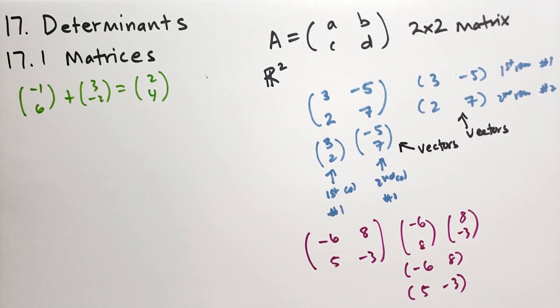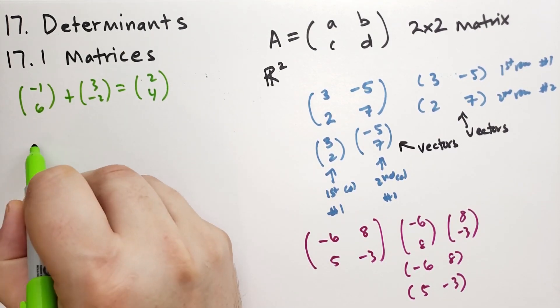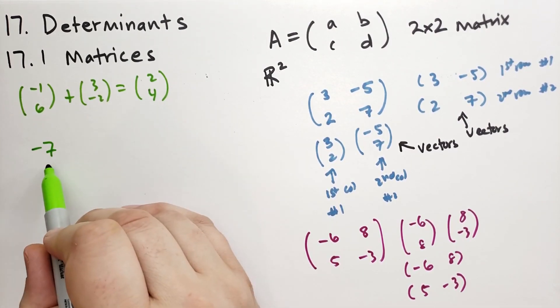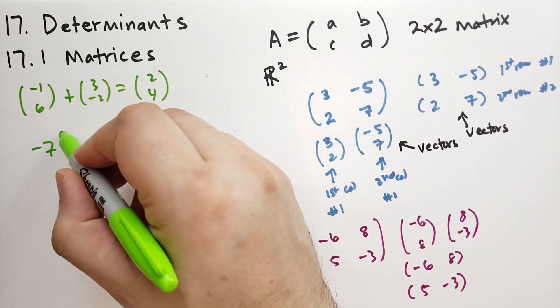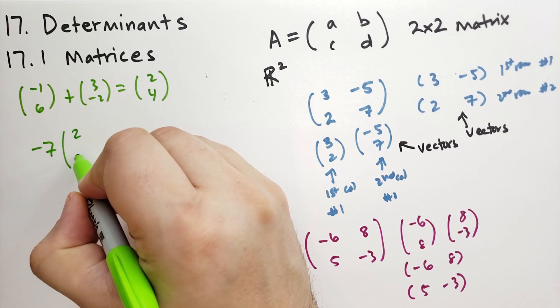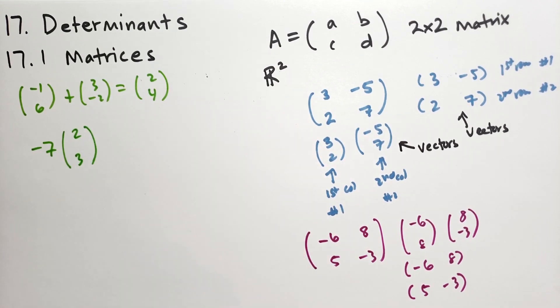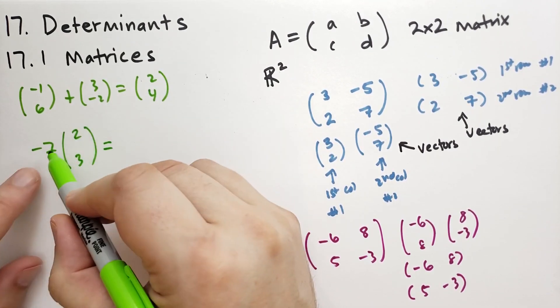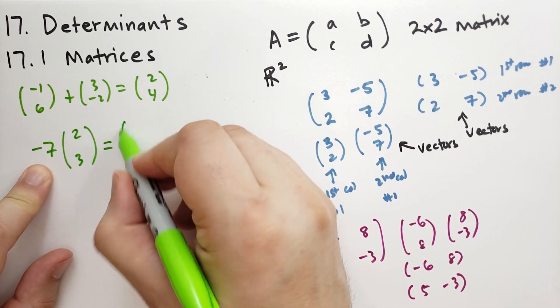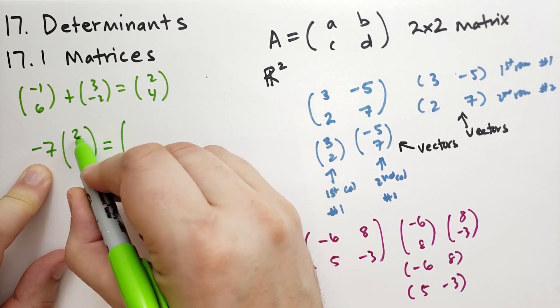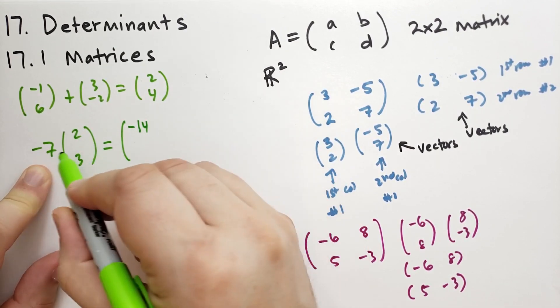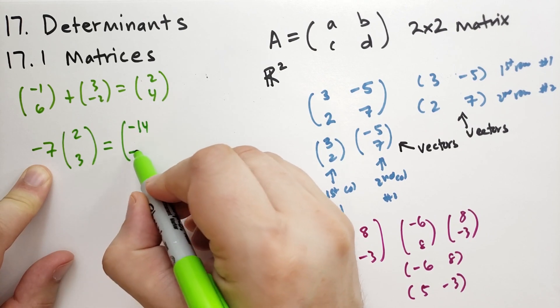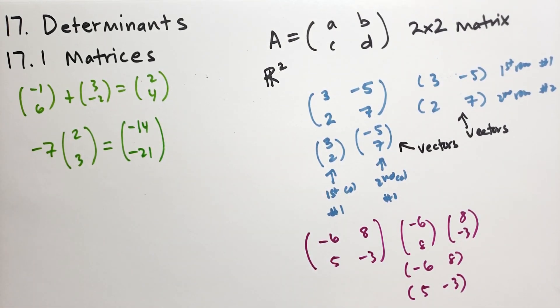If we were to multiply a column vector by a number, let's take minus 7. We might call this a scalar because it isn't a matrix, it's just a single number. And we multiply that by a column vector, let's say 2, 3, by minus 7. What we're going to do is multiply each component by that minus 7. So minus 7 times 2 is minus 14, and minus 7 times 3 is minus 21.